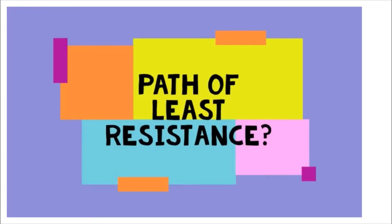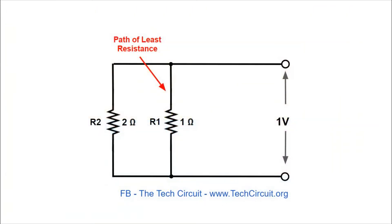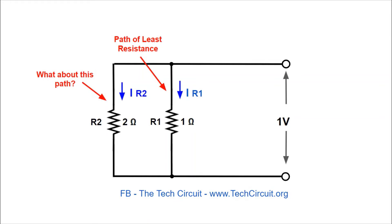Welcome to the Tech Circuit. A commonly heard phrase about electricity — or more specifically current — is that it takes the path of least resistance. This is often misinterpreted to mean that current takes only the path of least resistance and ignores all other paths. If you think this is how current works, keep watching, because it doesn't really work that way, and this video might change the way you think about electricity.